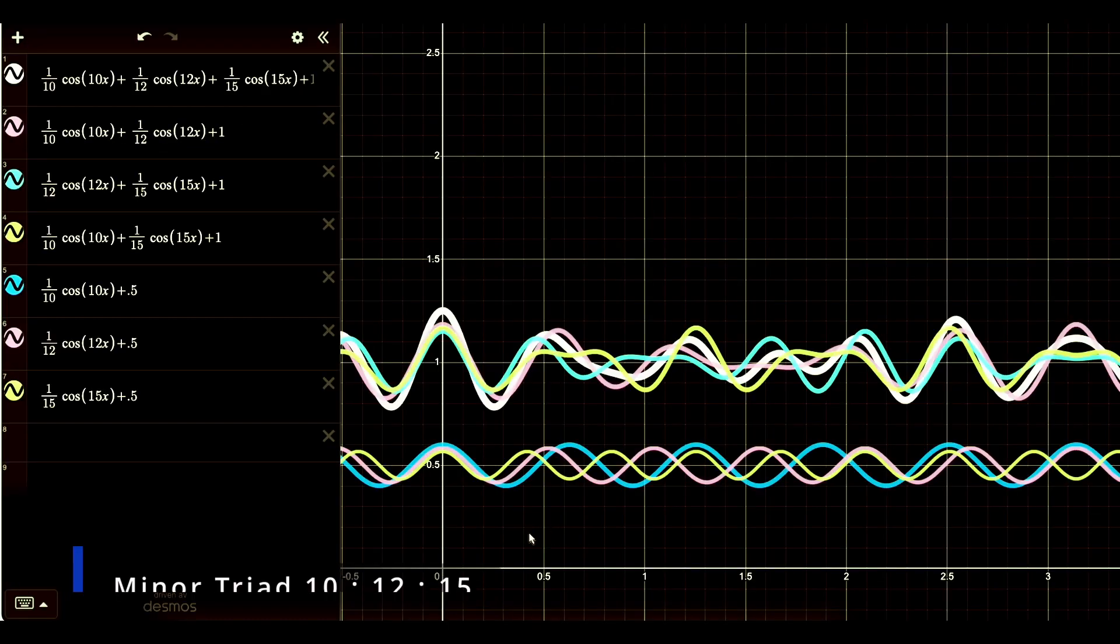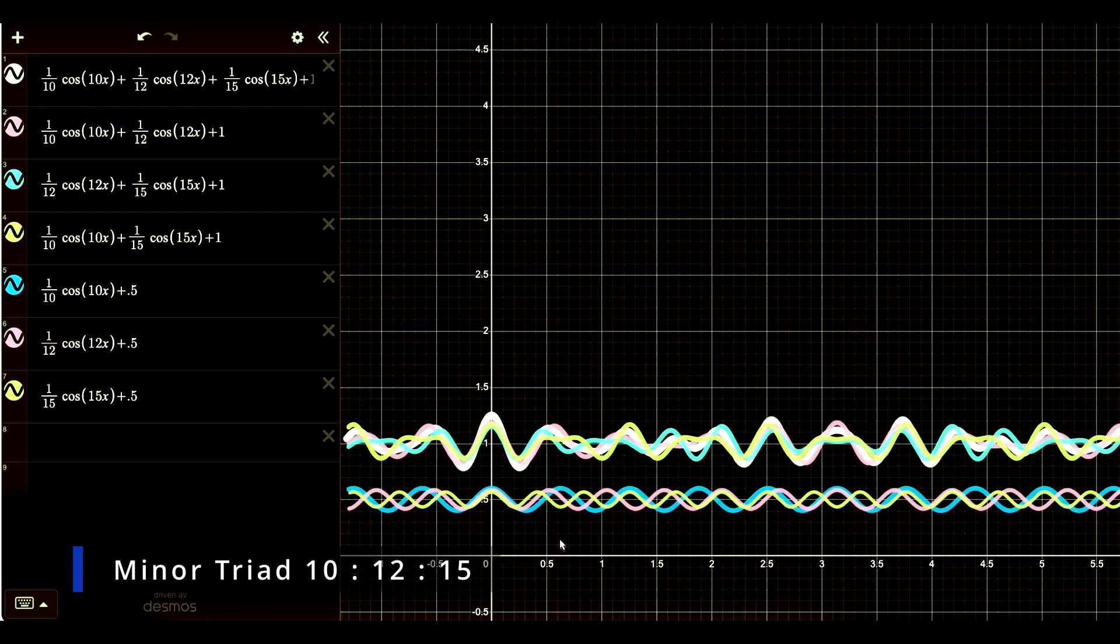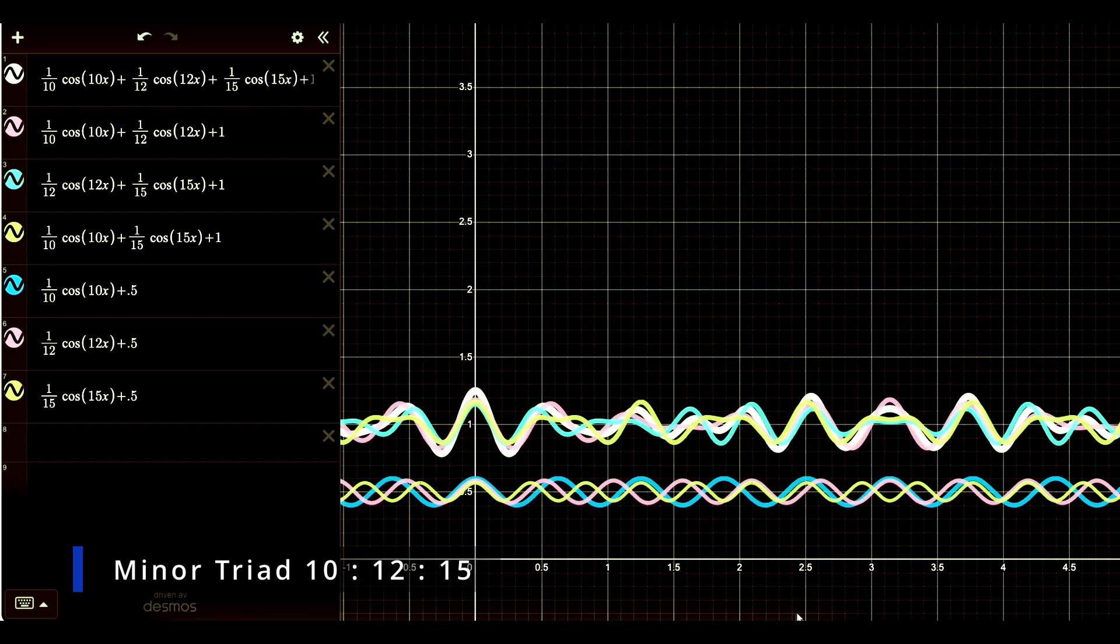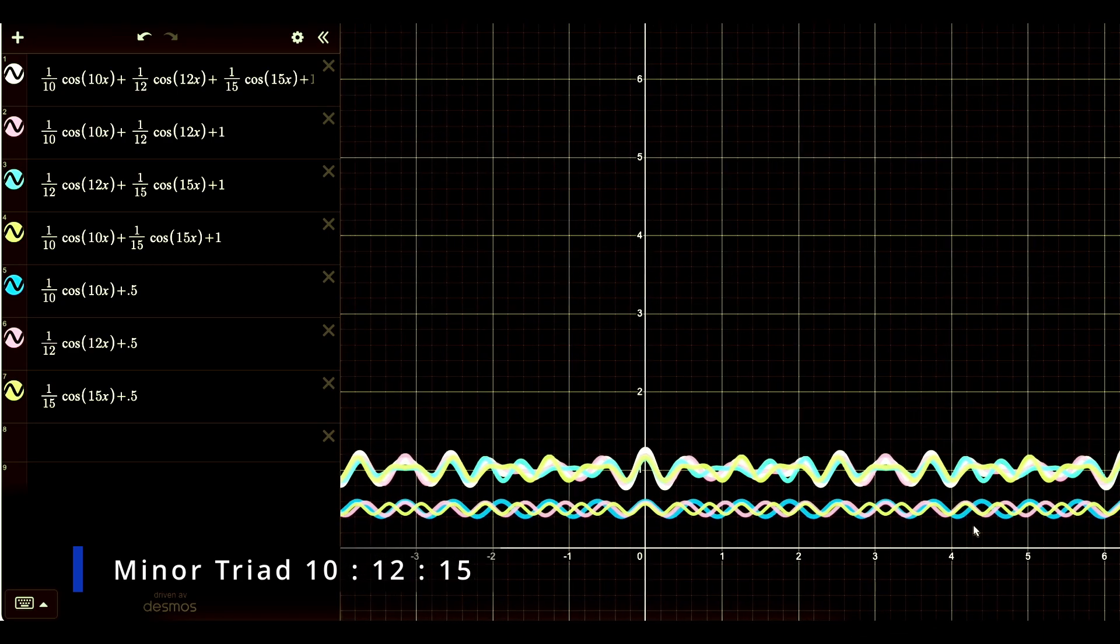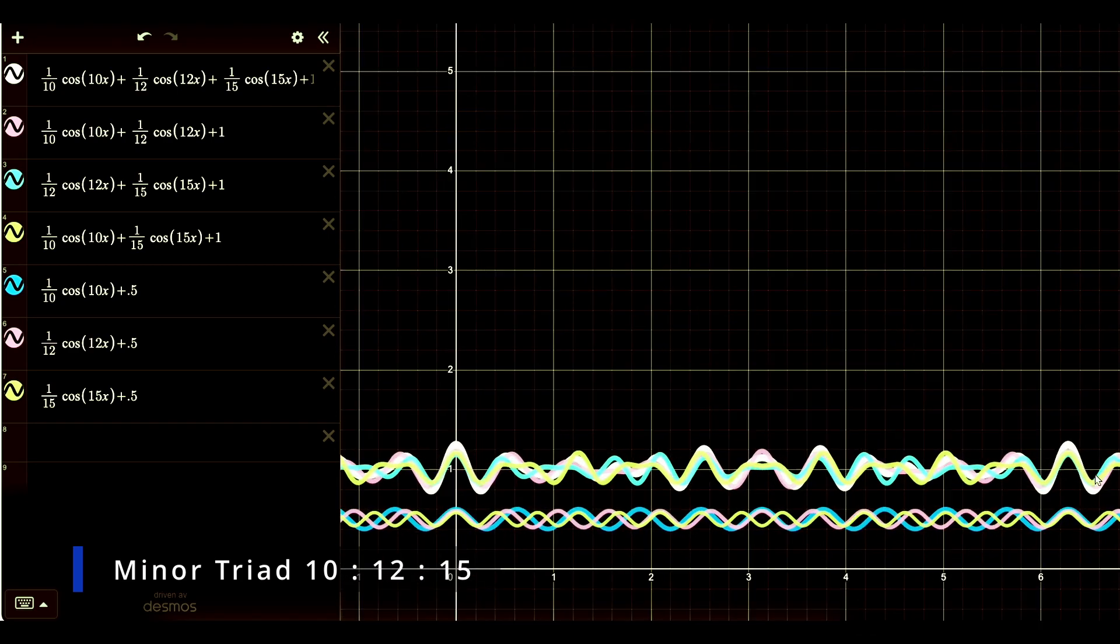And here we have the minor triad. This one takes much longer to actually cycle through. All the way to here.